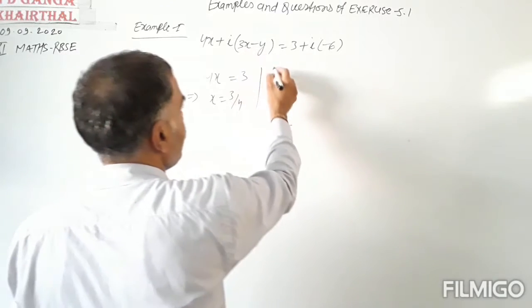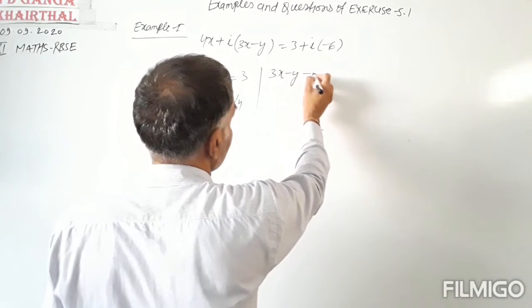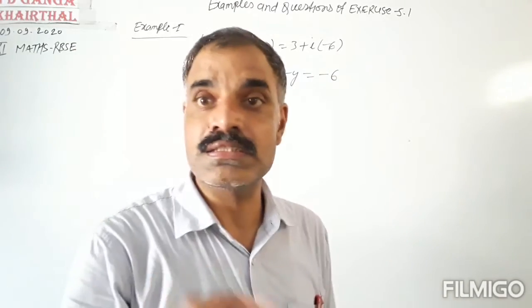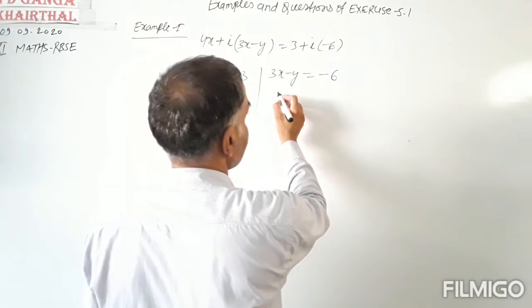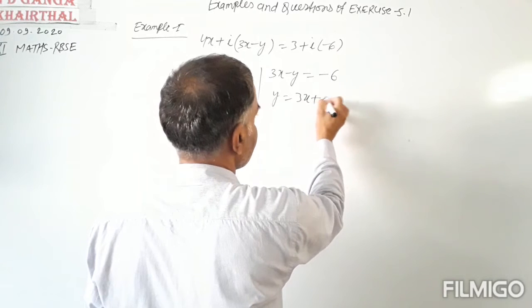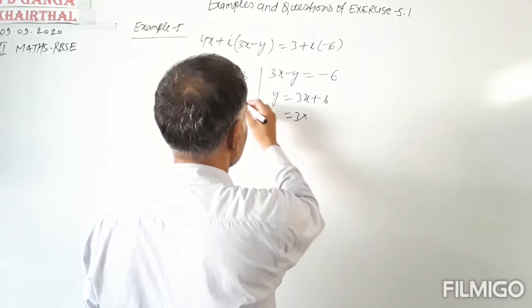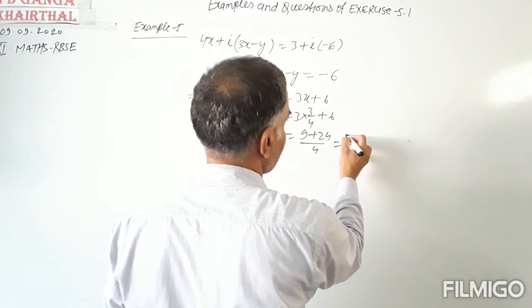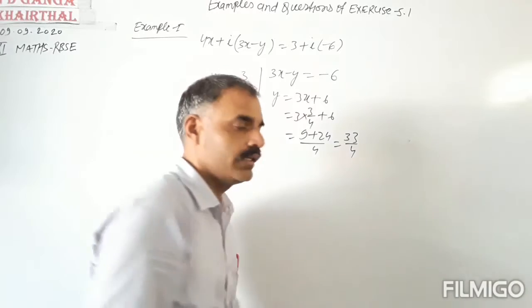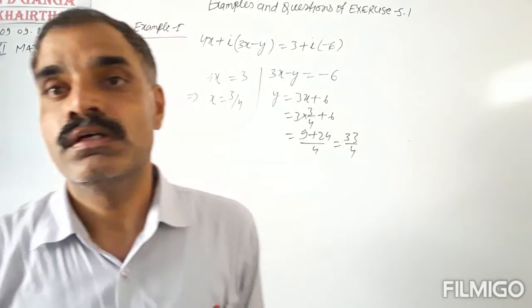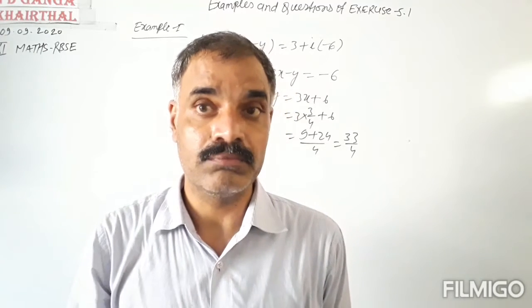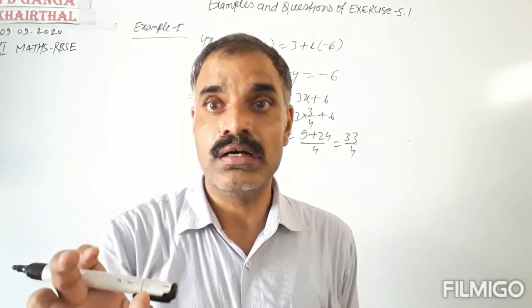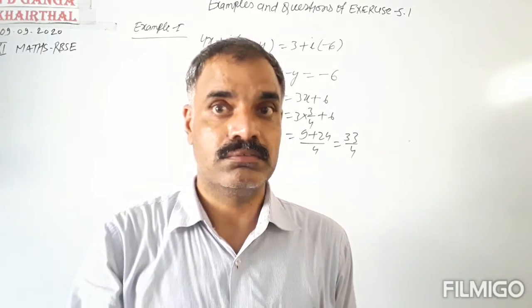The imaginary part of the first complex number, 3X minus Y, equals the imaginary part of the second complex number, which is minus 6. So 3X − Y = −6, giving Y = 3X + 6. Substituting X = 3/4: Y = 3 × (3/4) + 6 = 9/4 + 24/4 = 33/4. So Y = 33/4. The main concept here is the equality of two complex numbers.